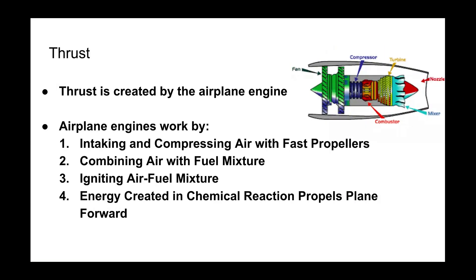Next is thrust, and thrust is created by the airplane engine. To the right you can see a classic jet engine. Airplane engines work by intaking and compressing air using their fast propellers, and then they combine that air with a fuel mixture inside the plane. This air-fuel mixture gets ignited, the ignition creates a chemical reaction, and the energy from the chemical reaction propels the plane forward.